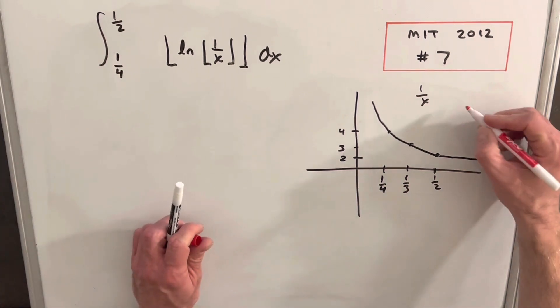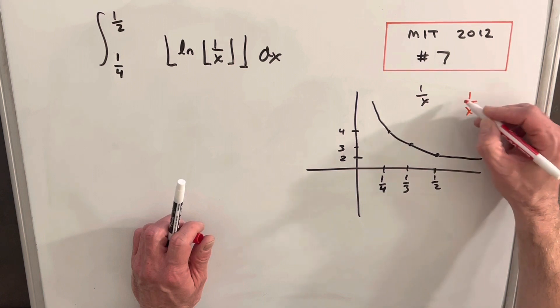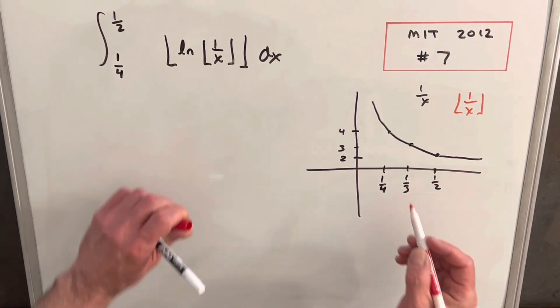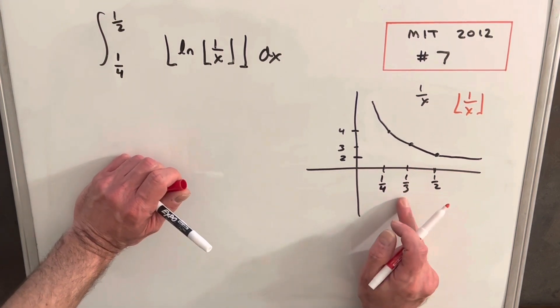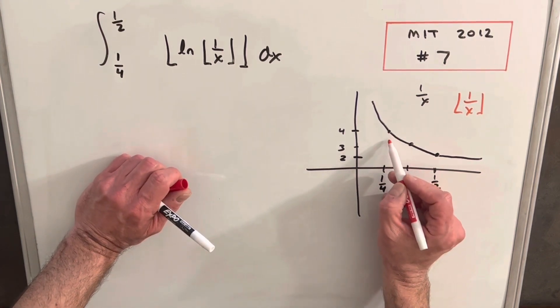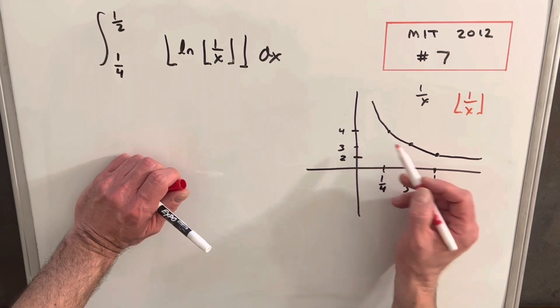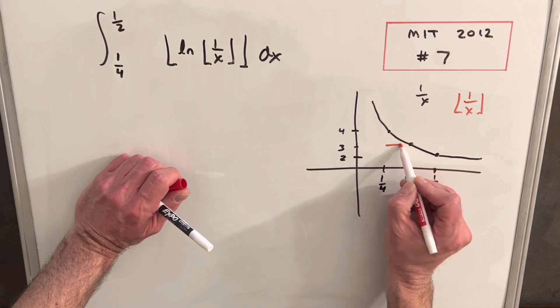But then what happens with the floor? Let's see what happens if we look at one over x, the floor function. Well, what the floor does, it rounds us down to the next lowest integer, unless we're already at an integer. And so we can kind of look at this case by case. Like in this region between a quarter and a third, all this stuff in here, like if we're at 3.5, 3.2, 3.999, all these values are going to round down to three.